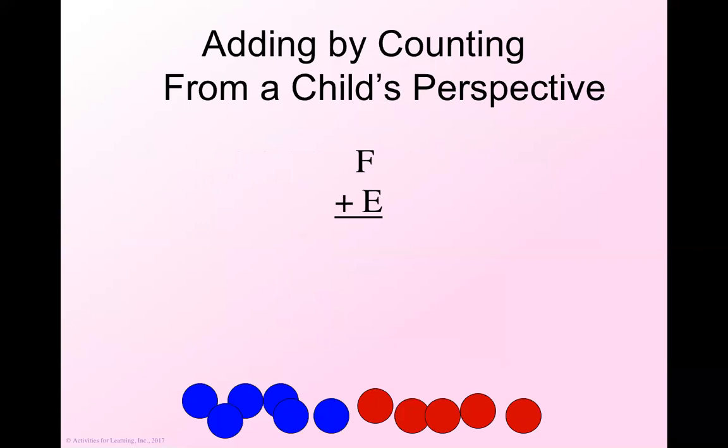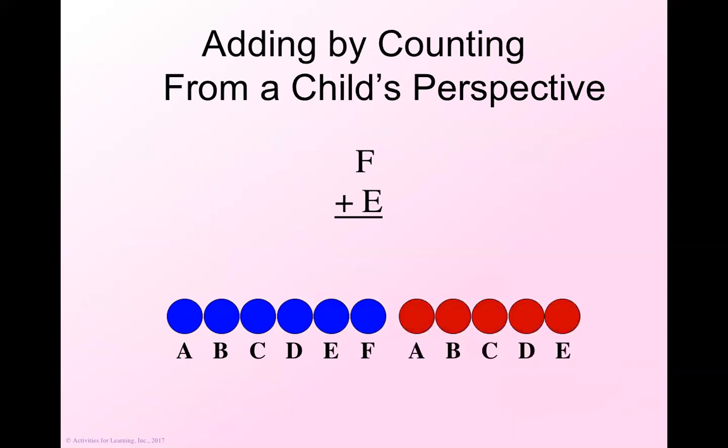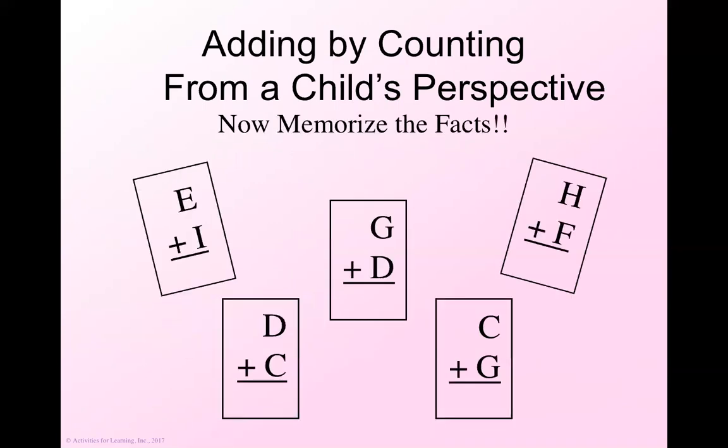Let me help you. Let's see. A, B, C, D, E, F. We need to add E. A, B, C, D, E. I need to count to see how many I have. A, B, C, D, E, F, G, H, I, J, K. Great, I've got K. Now, memorize them. This is what it looks like for the child who doesn't understand the quantities and doesn't understand adding. It just looks like magic, something they're not good at and everybody else gets for some reason.